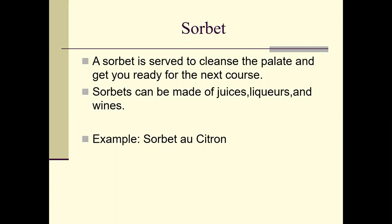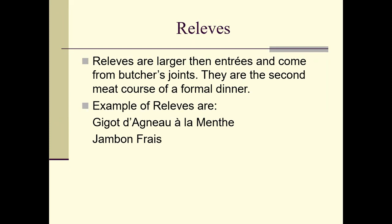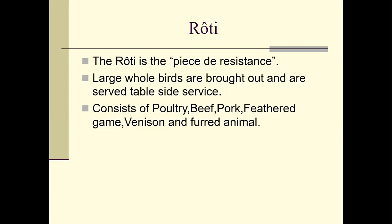Relevés are larger than entrées and come from butcher's joints — they are the second meat course of a formal dinner. Examples include gigot d'agneau à la menthe or jambon frais. These are big pieces of meat either carved at a side station on a guéridon or already plated and served to the guests. These relevés could have a starch or vegetable with them, or those could be served separately before or after. The rôti is the pièce de résistance — large whole birds brought out for tableside service, consisting of poultry, beef, pork, feathered game, venison, or furred animals.